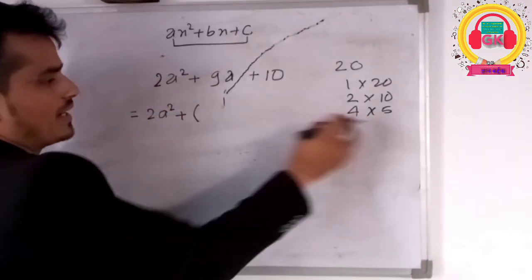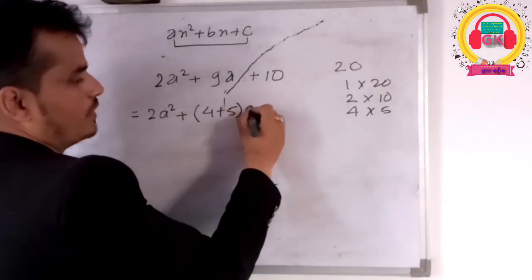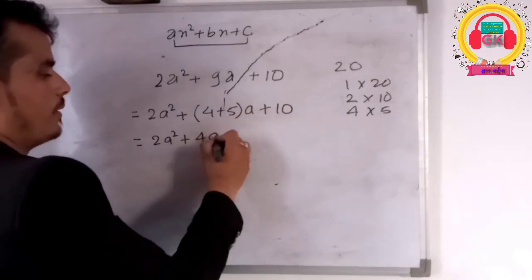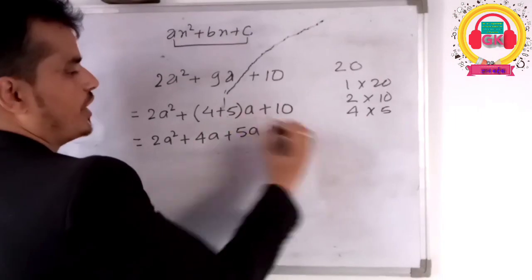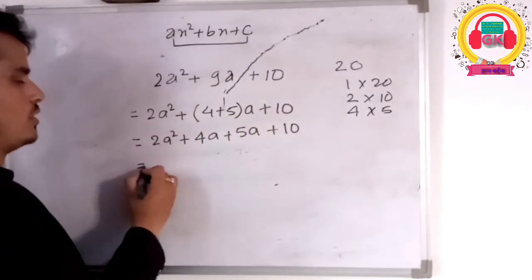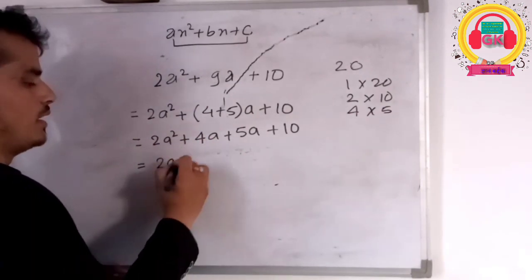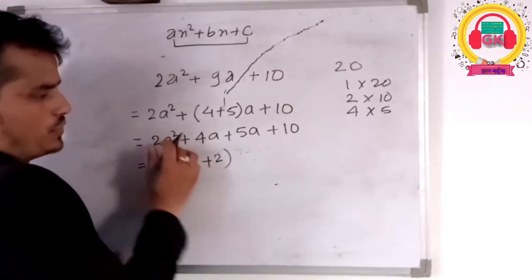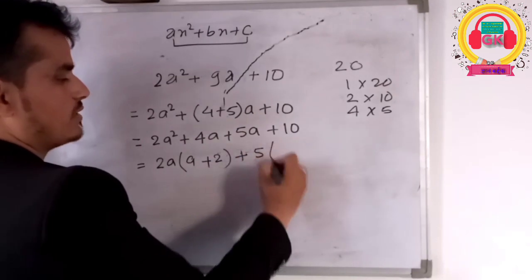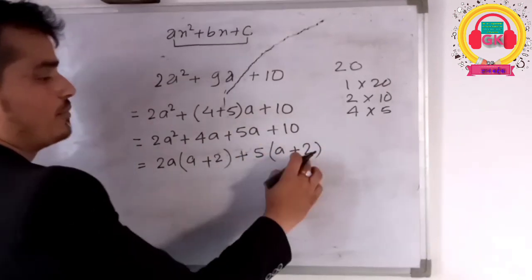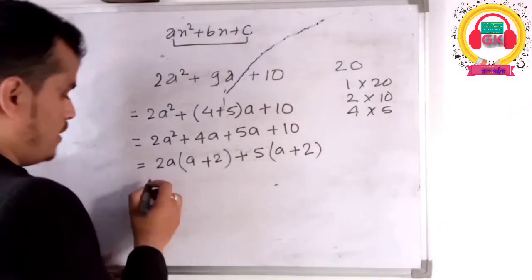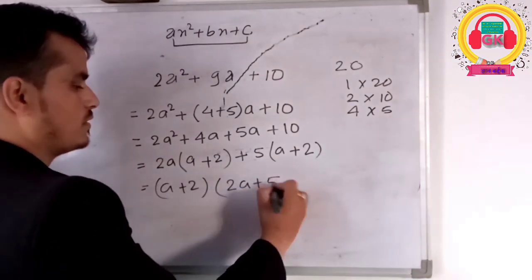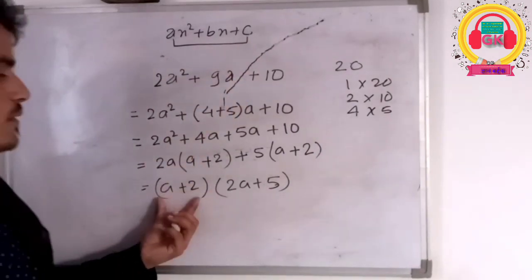For 2a squared plus 9a plus 10: multiply 2 by 10 to get 20. We need two numbers that multiply to 20 and add to 9 — that is 4 and 5. So we split: 2a squared plus 4a plus 5a plus 10. Taking 2a common from the first pair gives 2a times a plus 2. Taking 5 common from the second pair gives 5 times a plus 2. So a plus 2 is common, giving 2a plus 5 times a plus 2.